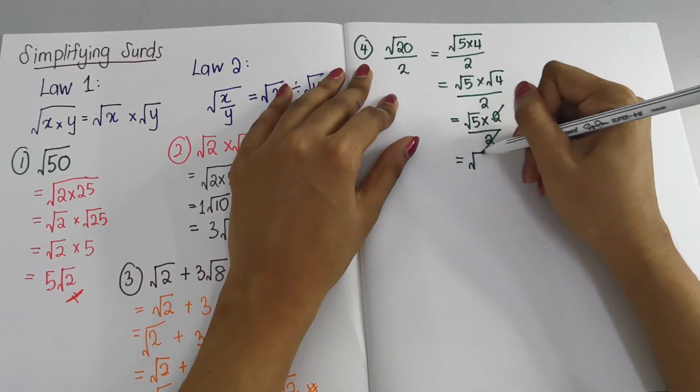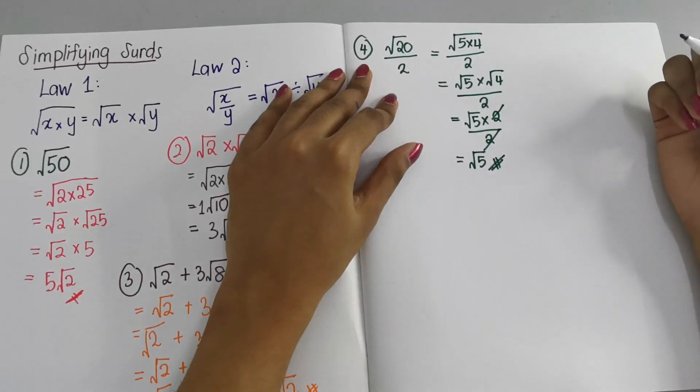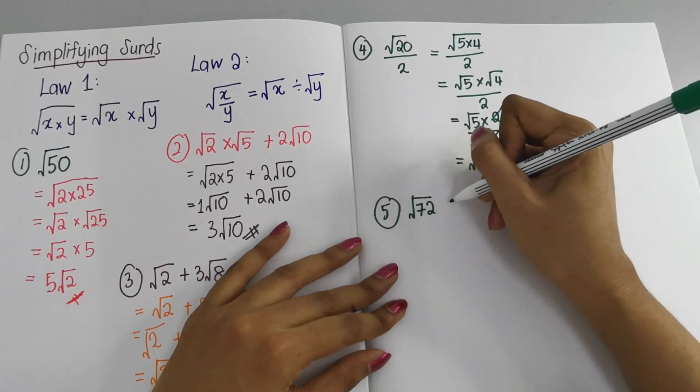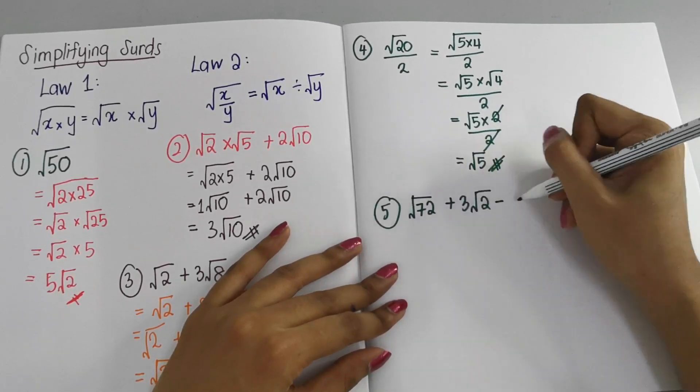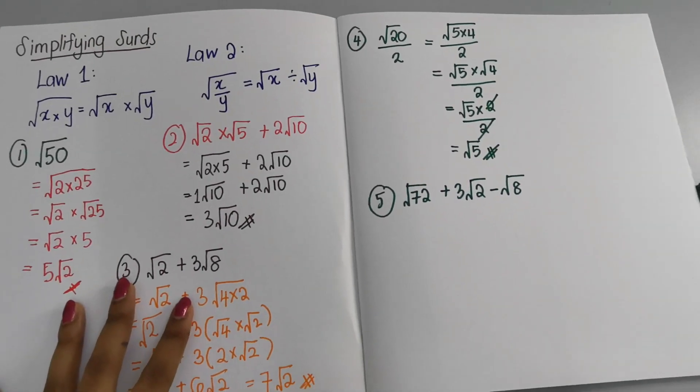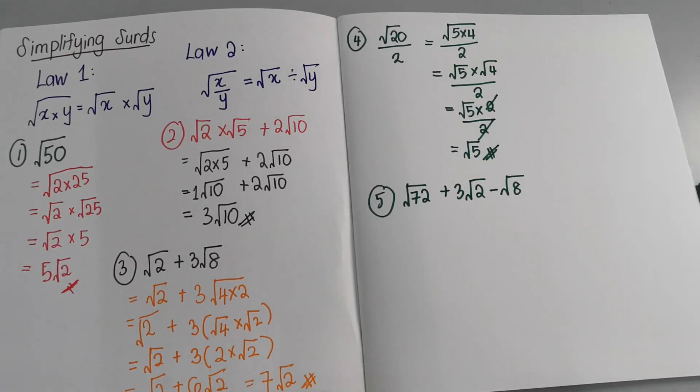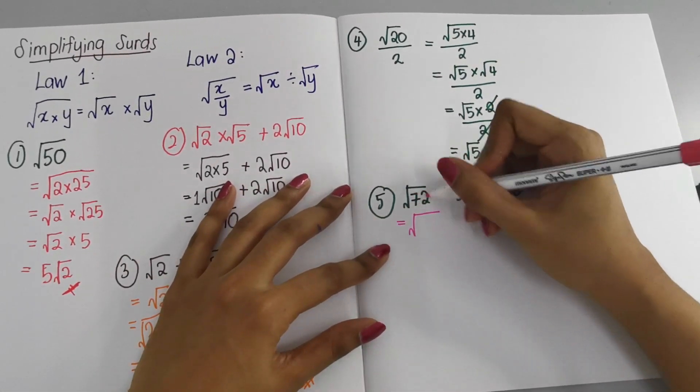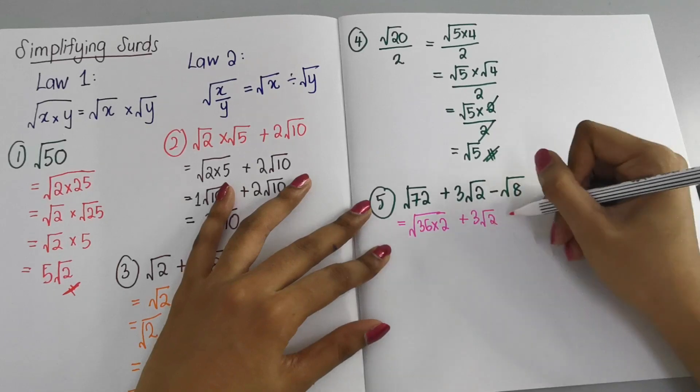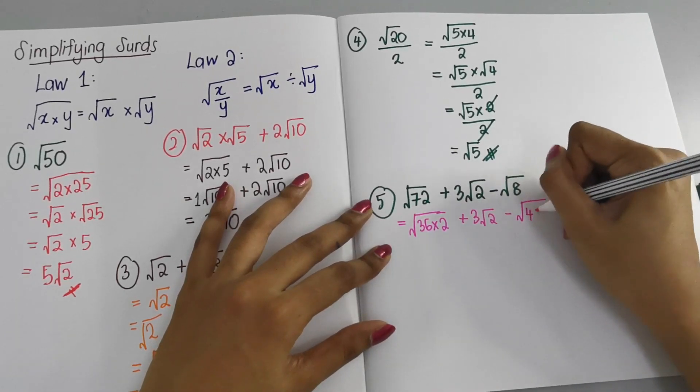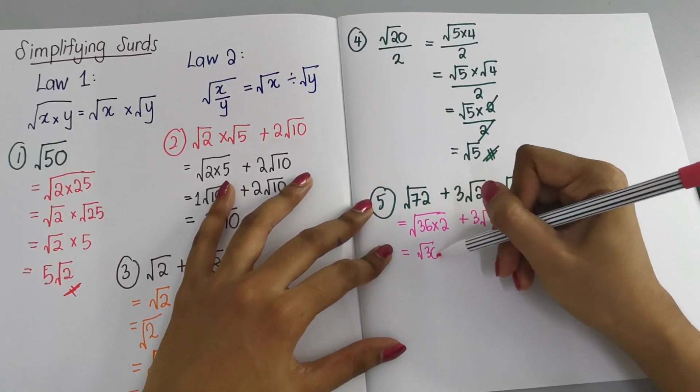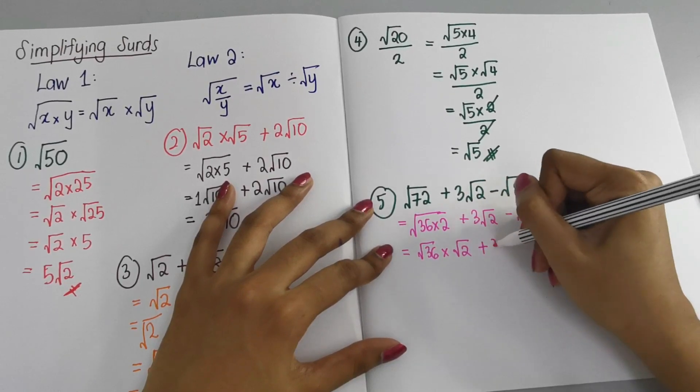And last one, number 5: √72 + 3√2 - √8. For 72, let's find the factors: 36 × 2 is 72, plus 3√2, minus of course here we can put 4 × 2 as the factors. So here √36 separate them: √36 × √2 + 3√2 - √4 × √2.